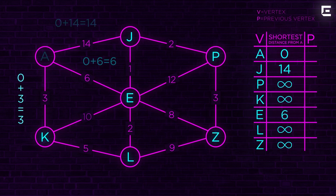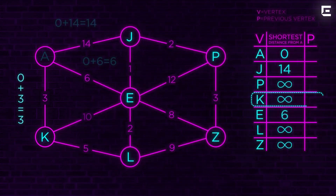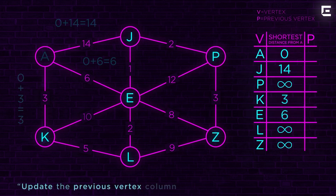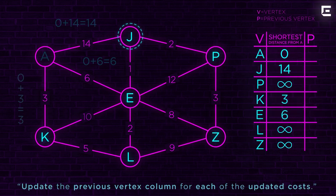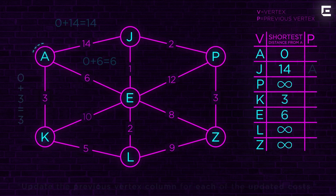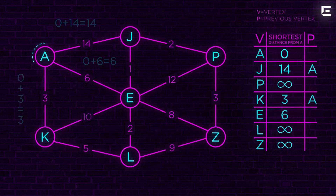The next step says: update the previous vertex column for each of the updated costs. To get to J, where did we come from? We came from A. For K, we also came from A. And for E, we came from A as well.